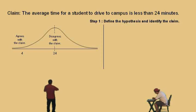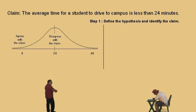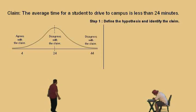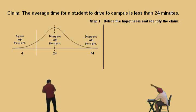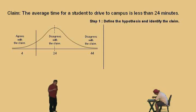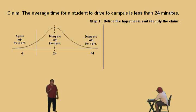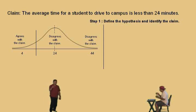Suppose the sample mean came out to be 44 — that would disagree also. So obviously there's a division: disagree, disagree, and agree. We're going to draw a little line for our division there. Remember, this helps us determine what kind of hypothesis test we have.